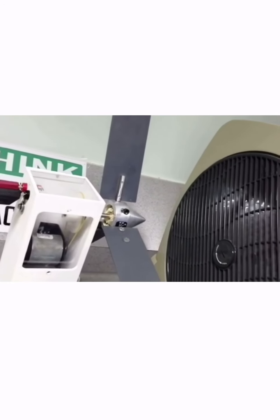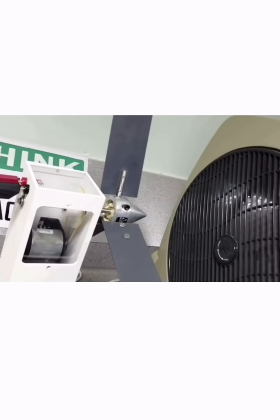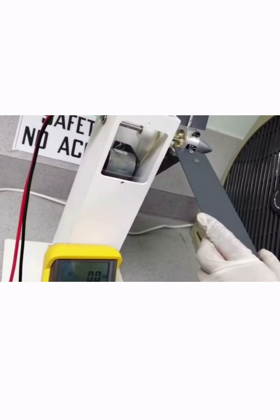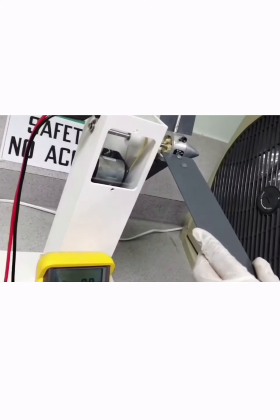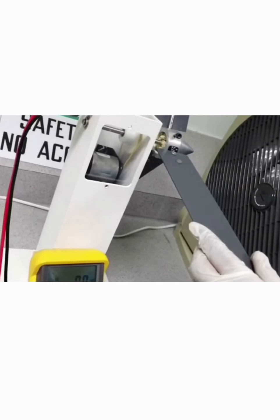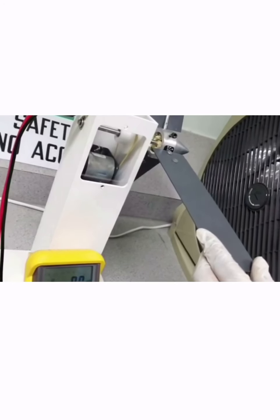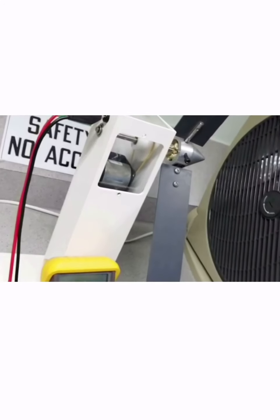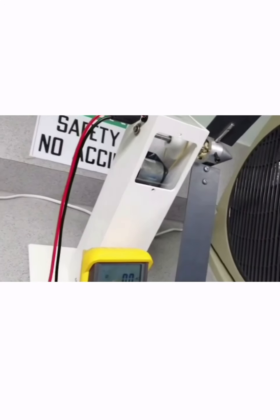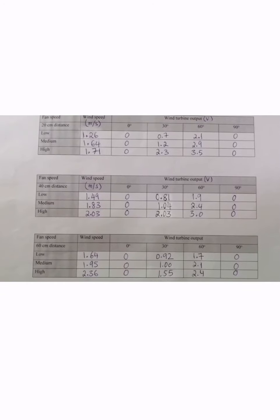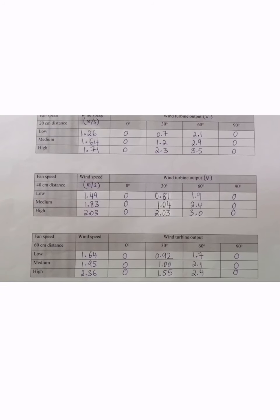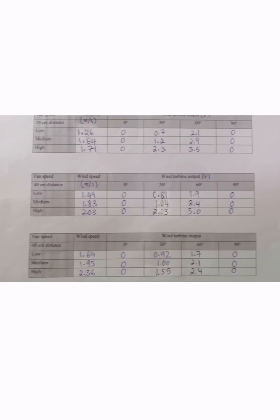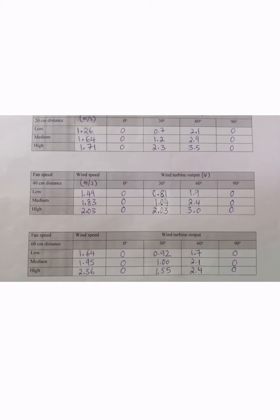Now we change the fan speed to high and again vary the blades from 0, 30, 60, then 90 degrees, measuring the output voltage and recording it in the table. We then complete the second and third tables by moving the turbine to 40 centimeters and then 60 centimeters. These are the final measurements: wind speed in meters per second and wind turbine output in volts. Good luck.